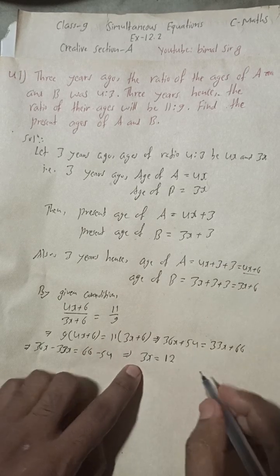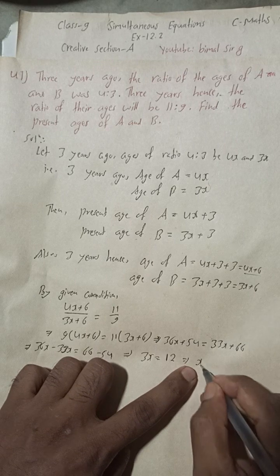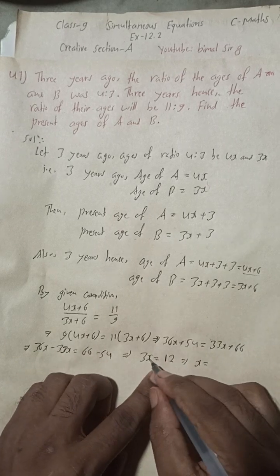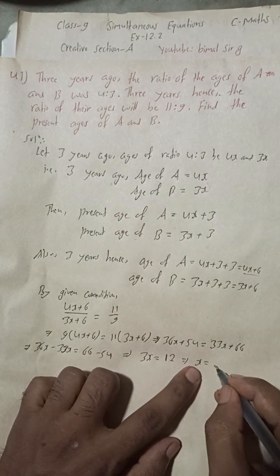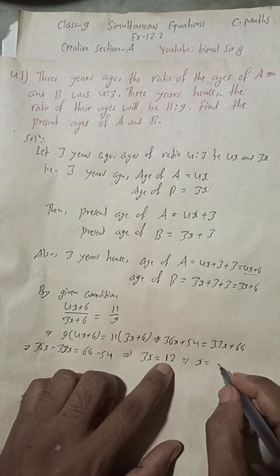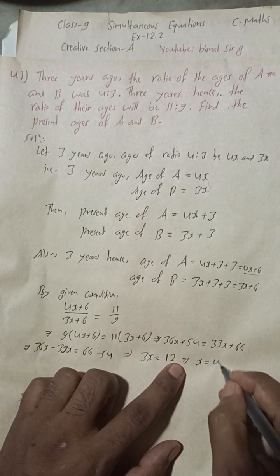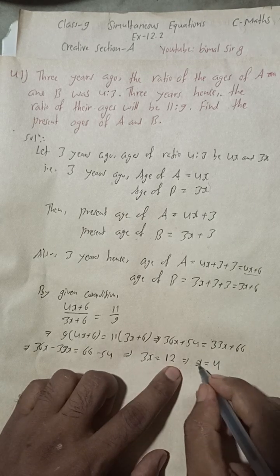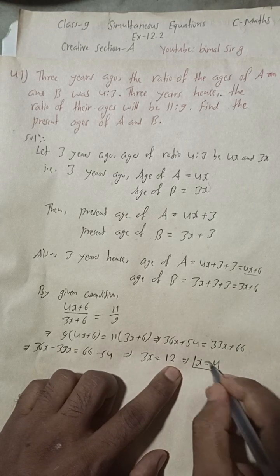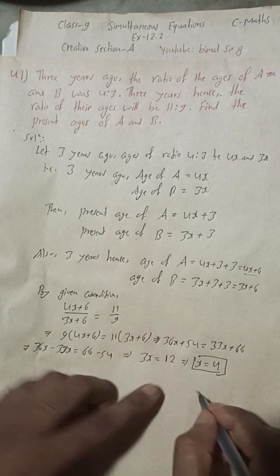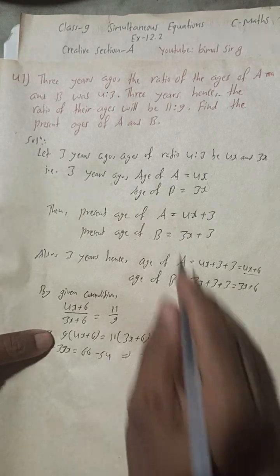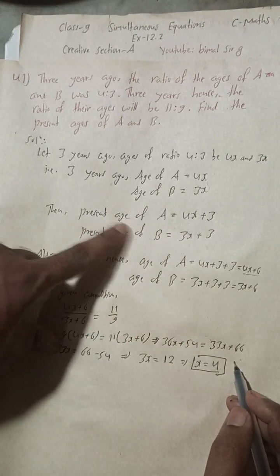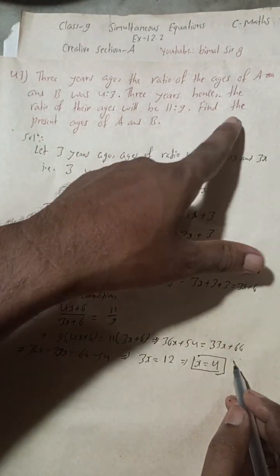Dividing both sides by 3: X equals 12 divided by 3, so X equals 4. Now we can easily find the present ages of A and B.